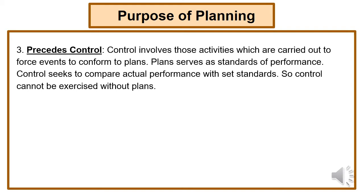For example, if an employee's targeted output is 100 units but the employee has achieved only 80 units, they have to work to cover the remaining 20 units. The controlling manager has to enforce this. If there is no base plan, then you cannot execute the control function. So planning is the basic thing needed to execute controlling work.